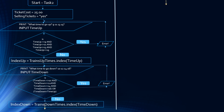Now we have the flowchart symbols for getting the time down. So we're going to print a message: what time do you want to go down? 10, 12, 14 or 16. Input time down. Then we have a decision box: is time down not equal to 10 and not equal to 12 and not equal to 14 and not equal to 16, or time down less than time up? If it's yes, we're going to print an error message and ask them to input the time down again.